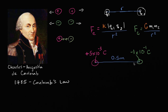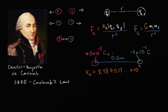We can already predict this is going to be an attractive force because the charges have different signs — that's part of Coulomb's Law. To actually calculate it, we need the electrostatic constant K. With modern precision it's 8.987551 times 10 to the 9th, but since we only have one significant digit here, let's approximate it as 9 times 10 to the 9th.